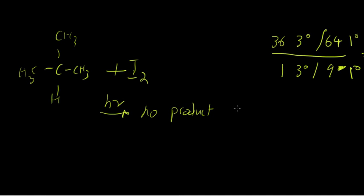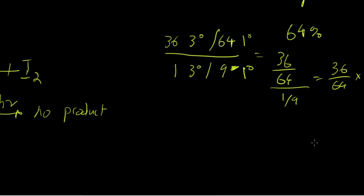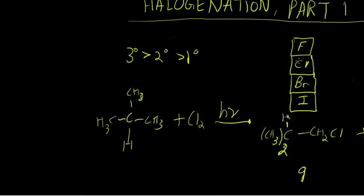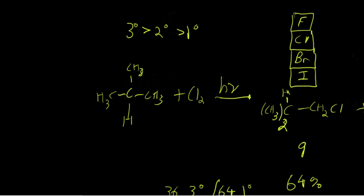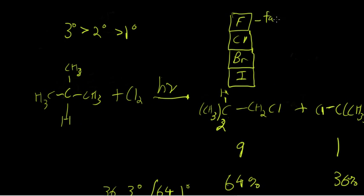In a previous video we used bond strength data to observe trends in reactivity of a given alkane to halogenation by various halogens, and found that fluorine is the most reactive and iodine is the least reactive. So reactivity weakens going down the periodic table. In this video we also found that selectivity changes going down the periodic table — with fluorine favoring tertiary 1.47 to 1 relative to primary hydrogen.